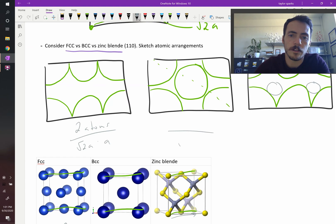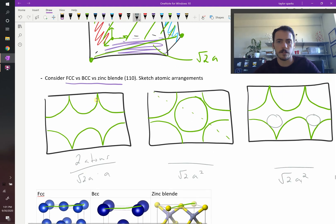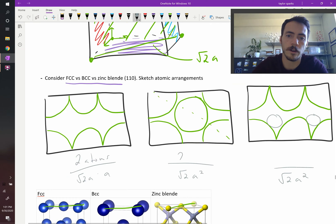Over here, you're going to have the same area. It's going to be root two a squared. This one's also going to be root two a squared. But the number of atoms, are they the same? How about this one? You've got a quarter, quarter, a quarter, quarter, plus one. So it's also two atoms.